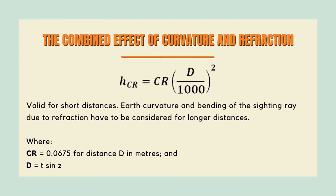Earth's curvature and bending of the sighting ray due to refraction have to be considered for longer distances. The correction of curvature and refraction is represented by HCR = CR × D / 1000, where CR = 0.0675 for distance D in meters, and D = T sin Z.